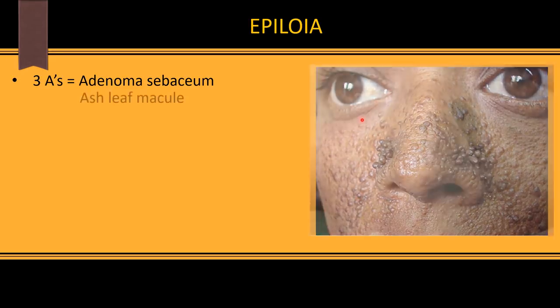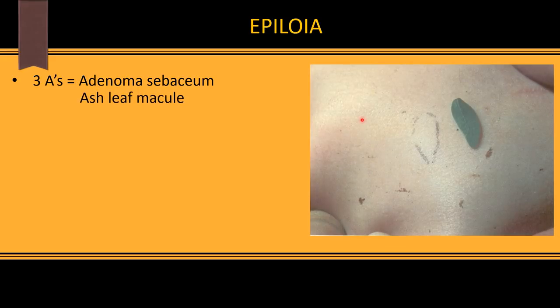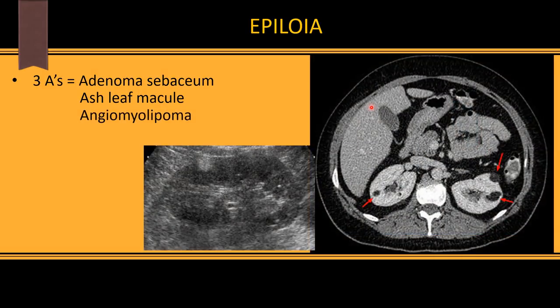The second A is ash leaf macule — a hypopigmented macule shaped like an ash leaf, pointed at one end and rounded at the other. The most common site is on the trunk.